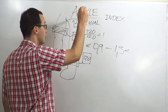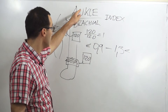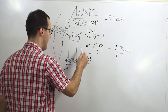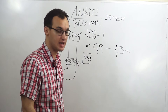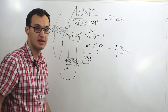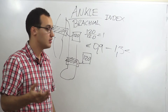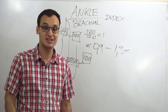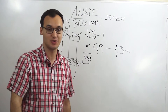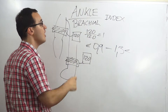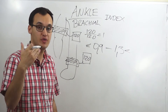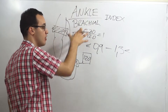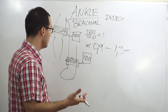To memorize the formula, remember it's called ankle brachial index, not brachial ankle index. So the ankle stands in the numerator and the brachial is in the denominator. The ankle is the lower part of your body and the brachial is the upper part, but in the fraction, ankle is always on top.